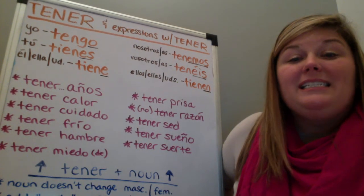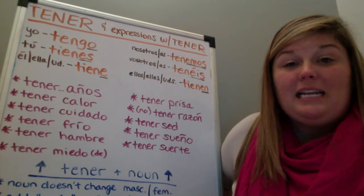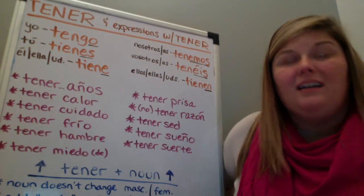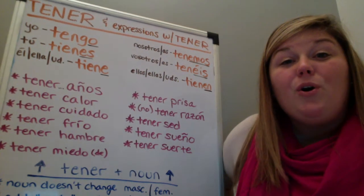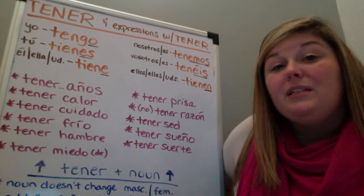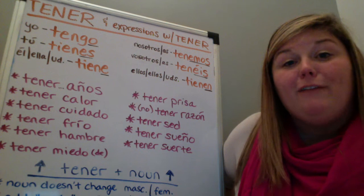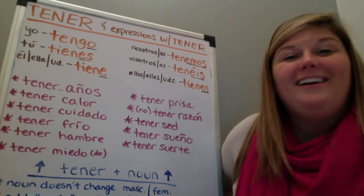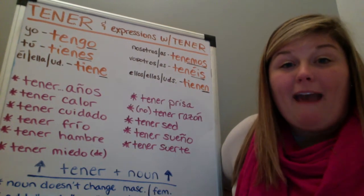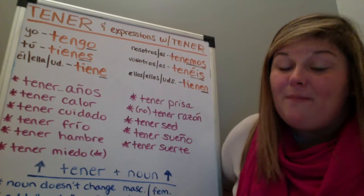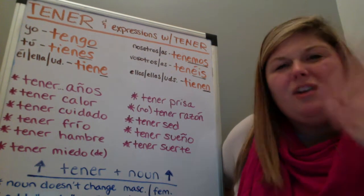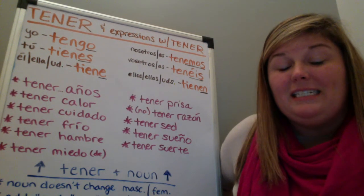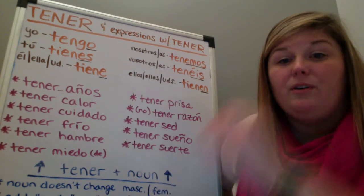The next one is tener calor, which means to be hot. So if I want to say 'I am hot,' as in 'oh, it's so hot in here,' I would say tengo calor — literally meaning 'I have heat.' In English I wouldn't say 'I have heat,' so again we cannot translate literally. When you want to say 'I'm really hot' in English, the best way in Spanish is to say tengo calor.